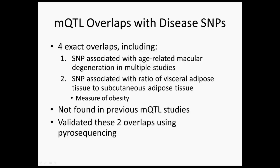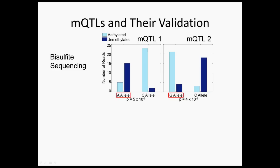In order to show that these MQTLs are real and not just an artifact of bisulfite sequencing, we validated them using a method called pyrosequencing, which is thought to be a better but also much more expensive method for assaying methylation. For the first MQTL, associated with macular degeneration, individuals with the A allele — the allele associated with macular degeneration — generally have an unmethylated CpG nearby, whereas those with the C allele, which is not associated with macular degeneration, have the CpG nearby being methylated. This suggests that lack of methylation in this CpG is associated with macular degeneration.